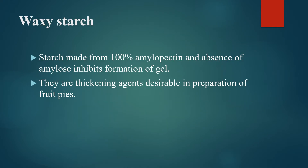Waxy starch is one example of native starches. These are made from 100% amylopectin, and the absence of amylose inhibits the formation of gel. Thus, waxy starches cannot be used for gel formation, but they can be used as a thickening agent in many food products.